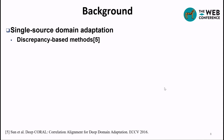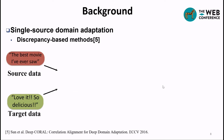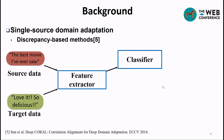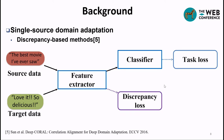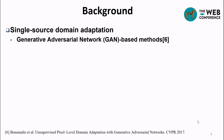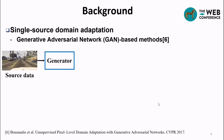To address the domain shift, many single-source domain adaptation methods have been proposed. One representative type is discrepancy-based methods, which use a traditional pipeline with a feature extractor and classifier on the labeled source domain for task loss, plus a discrepancy loss such as curl loss to align features between target and source domains. The other typical type is generative adversarial network-based methods, which generate an intermediate domain indistinguishable from the target domain based on GAN loss.